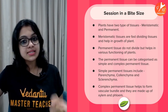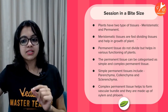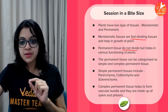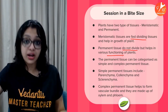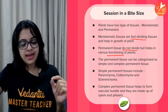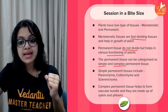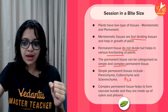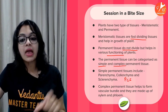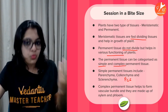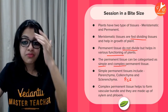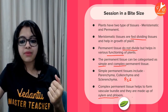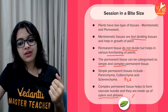Here's the bite-size summary: plants have two types of tissues — meristematic and permanent. Meristematic tissues are fast-dividing; permanent tissues do not divide but help in various plant functions. Simple permanent tissues include PCS — parenchyma, collenchyma, sclerenchyma. Complex permanent tissues form the vascular bundle: xylem and phloem (XP).